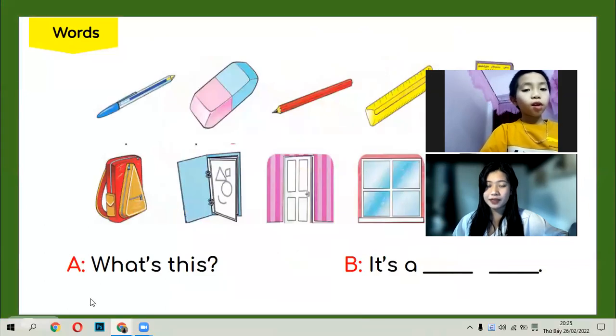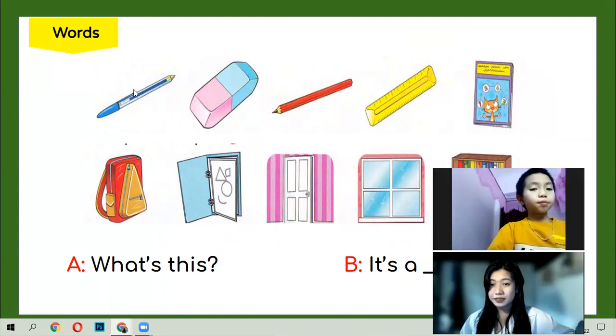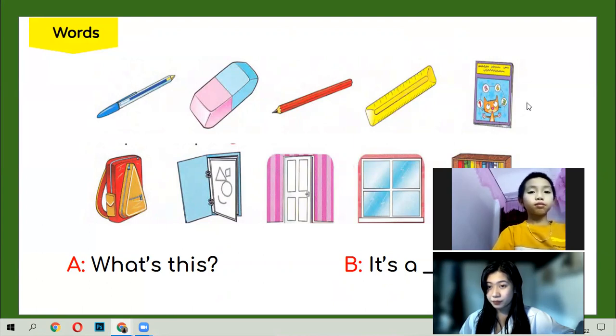Now, what's this? It's a pen. A pen. What's this? It's a rubber. Rubber. Rubber. What's this? It's a pencil. Pencil. Pencil. What's this? What's this? It's a ruler. Ruler. What's this? It's a book. Book. What's this? It's a bag. It's a bag.